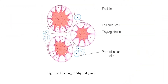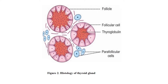Let's look into the histology of the thyroid gland. Thyroid gland is composed of a large number of closed follicles. The follicles are lined with cuboidal epithelial cells which are called the follicular cells. The follicular cavity is filled with a colloidal substance known as thyroglobulin, which is secreted by the follicular cells. Follicular cells secrete tetraiodothyronine (T4 or thyroxine) and triiodothyronine (T3). In between the follicles, the parafollicular cells are present, and these cells secrete calcitonin.